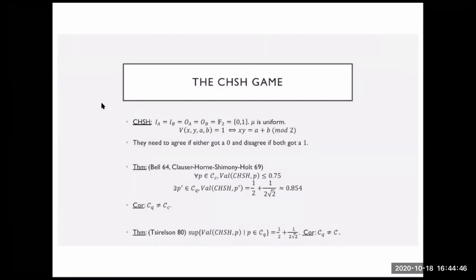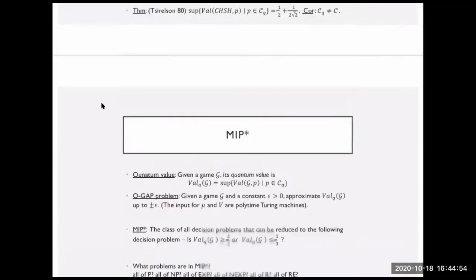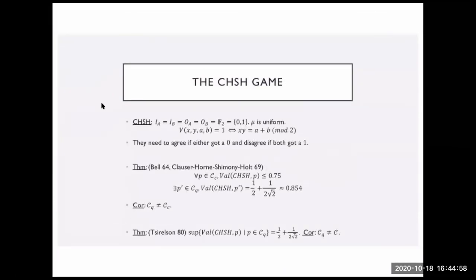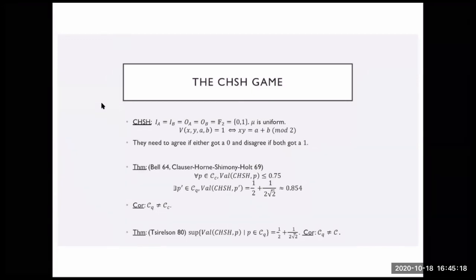The question was raised about what the quantum correlation set looks like. It's not a polytope — there are no faces, which can be shown using Bell inequalities. Tsirelson's question is essentially about understanding how these sets behave and what characterizes them.